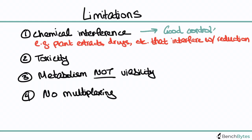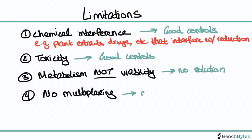For the first two limitations — chemical interference and toxicity — it's important to have good controls, and we'll talk about that when we discuss plate design. For the third limitation, it's really just something to be aware of and make sure you're not using compounds that might affect metabolism. And for the fourth, if you do need to multiplex, you may want to consider a different approach.